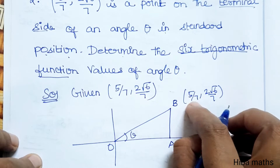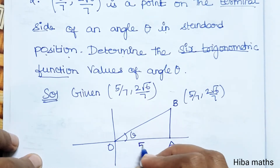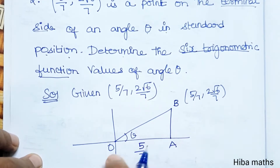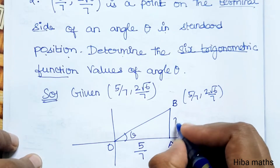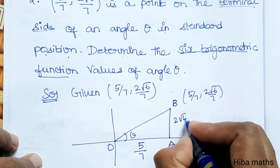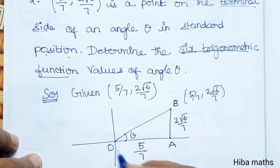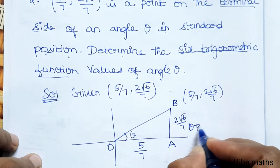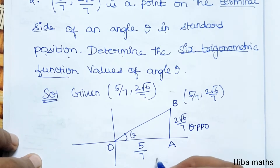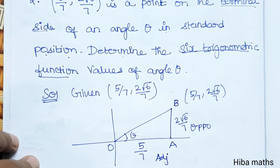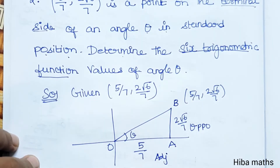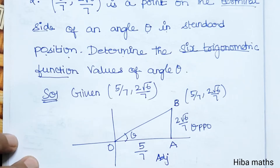So the x-coordinate is 5/7 and the y-coordinate is 2√6/7. Theta will have an opposite side, an adjacent side, and a hypotenuse. Once we have the hypotenuse, we can find all six trigonometric ratios.